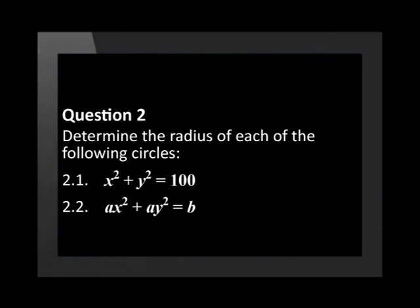Determine the radius of each of the following circles. x² + y² = 100. ax² + ay² = b.